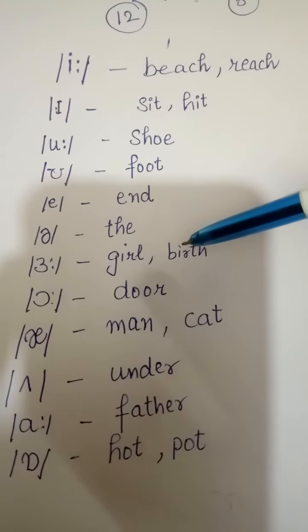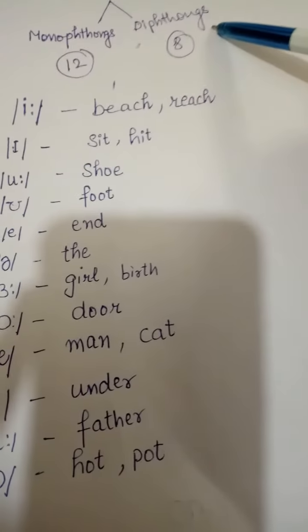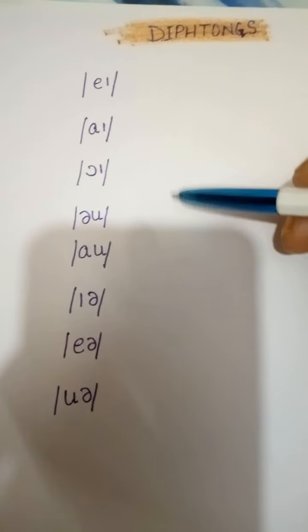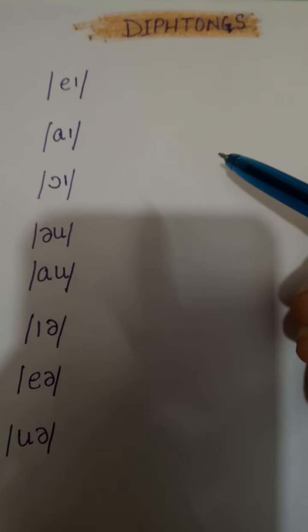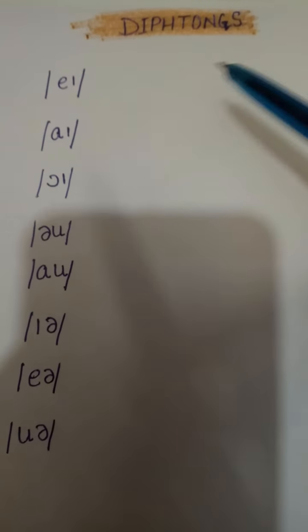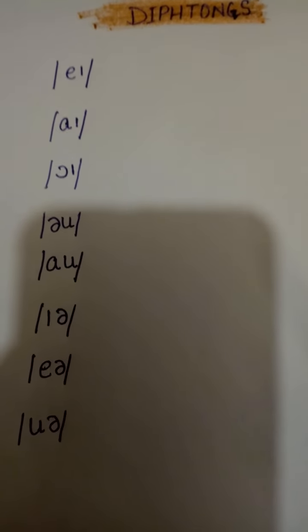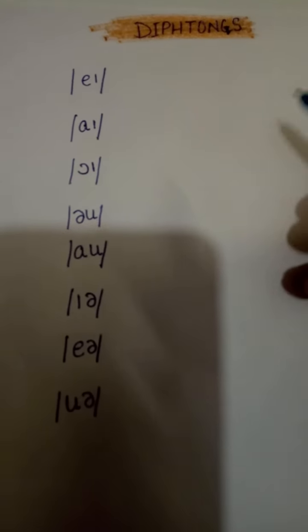Now we will do diphthongs. Students, there are eight diphthongs. 'Di' stands for two, so a diphthong means the combination of two vowel sounds. A diphthong begins as one vowel sound and moves towards another vowel sound. It is a combination of two vowel sounds. Let's get started.